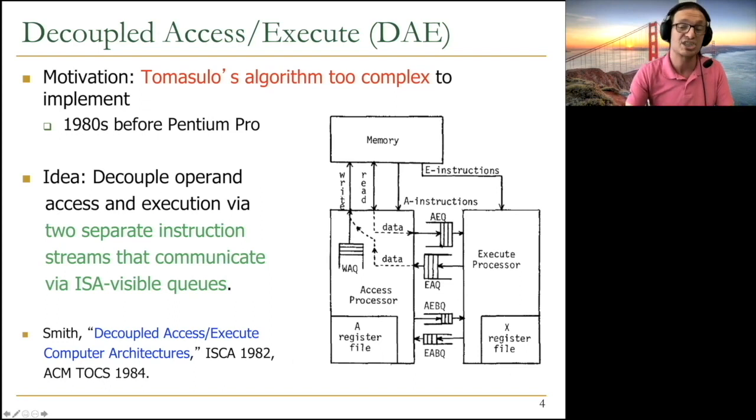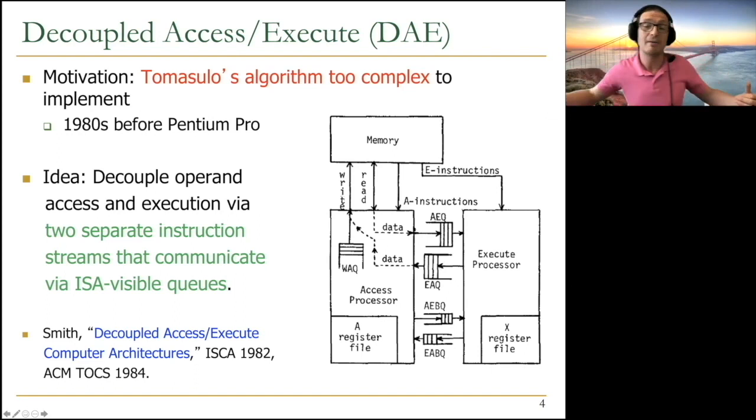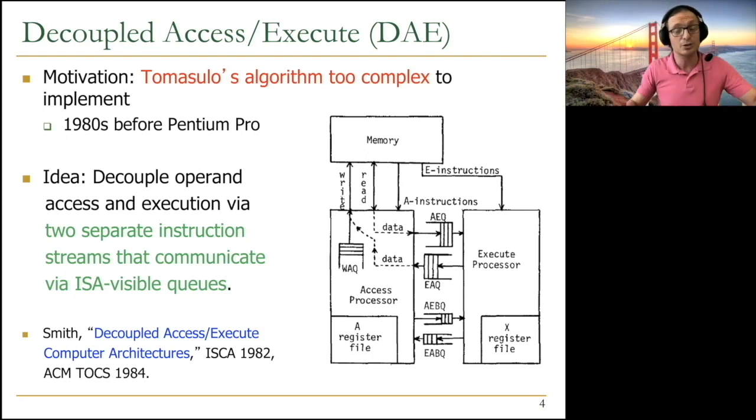You can see that ISA needs to change over here. Communication happens through these queues. These are FIFO queues, ISA visible, instruction visible queues. The length of the queues determine how much latency you can tolerate on the memory side as well as on the execute side. These queues can be very scalable. They're not like the tag matching logic reservation stations. Reservation stations are hard to scale, load store queues are hard to scale. Whereas here, queues can be scalable because it's a FIFO queue. There's also a branch queue to keep these synchronized as well.